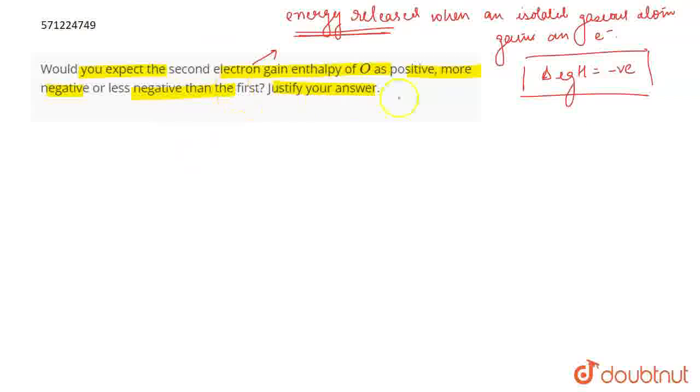If you talk about the first electron gain enthalpy of oxygen, this is the oxygen gaseous atom. It gains an electron and becomes O negative. As it is gaining an electron, its electron gain enthalpy is going to be negative, and it has a value of minus 141 kilojoule per mole. This value is negative because it is gaining one electron and the energy is getting released.